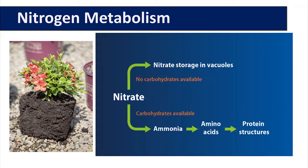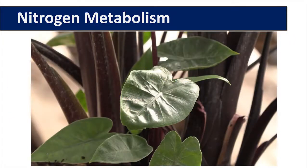Nitrate uptake is an active process which means energy is required. Nitrate is a negatively charged ion. If sufficient carbohydrates are available, nitrate is reduced to ammonia which is then incorporated into amino acids and then into protein structures needed by the plant. However, if there is insufficient carbohydrate available to assimilate nitrate into amino acids, the nitrate can be stored in vacuoles inside the cells for use when the plant has sufficient carbohydrates available to assimilate it.